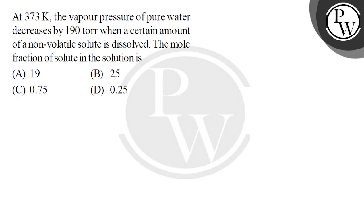Hello children, let's read the question. At 373 Kelvin, the vapor pressure of pure water decreases by 190 torr when a certain amount of non-volatile solute is dissolved. Non-volatile solute means there is no vapor pressure under given conditions. The mole fraction of solute in the solution.